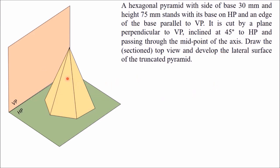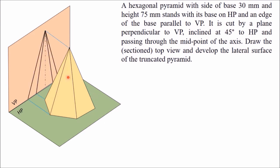We have to draw the orthographic projection of this pyramid in this position. We draw that view where the true shape of the base is visible — the base is visible from the top, so the top view will be drawn first. You will get a hexagon of side 30 mm with two sides parallel to the XY line. After that, you draw the front view.